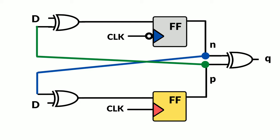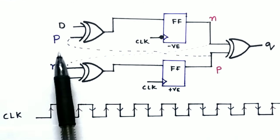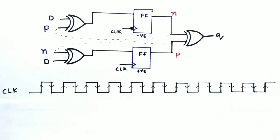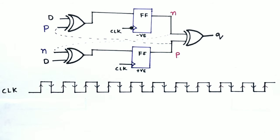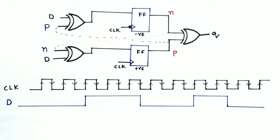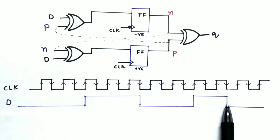This is the dual edge trigger flip-flop circuit. Let's analyze it for better understanding using waveforms. I have drawn the circuit on paper without showing the feedback connections — P and N labels are marked accordingly. This is the clock, showing positive and negative edges. Now let's give input D to this circuit, which will be used to check the functionality of the dual edge trigger flip-flop. D goes high, then goes down at a negative edge, goes high at a positive edge, and goes down at the next negative edge.